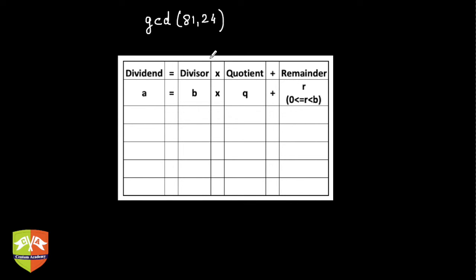Let us take another example to understand it better. We have two integers 81 and 24. The bigger of the two becomes a first, so a is 81 and b is 24. How many times does 24 go into 81? 24×3 is 72 and 24×4 is 96, so we take 24×3 which is 72, and the remainder is 9, since 72 plus 9 gives 81.